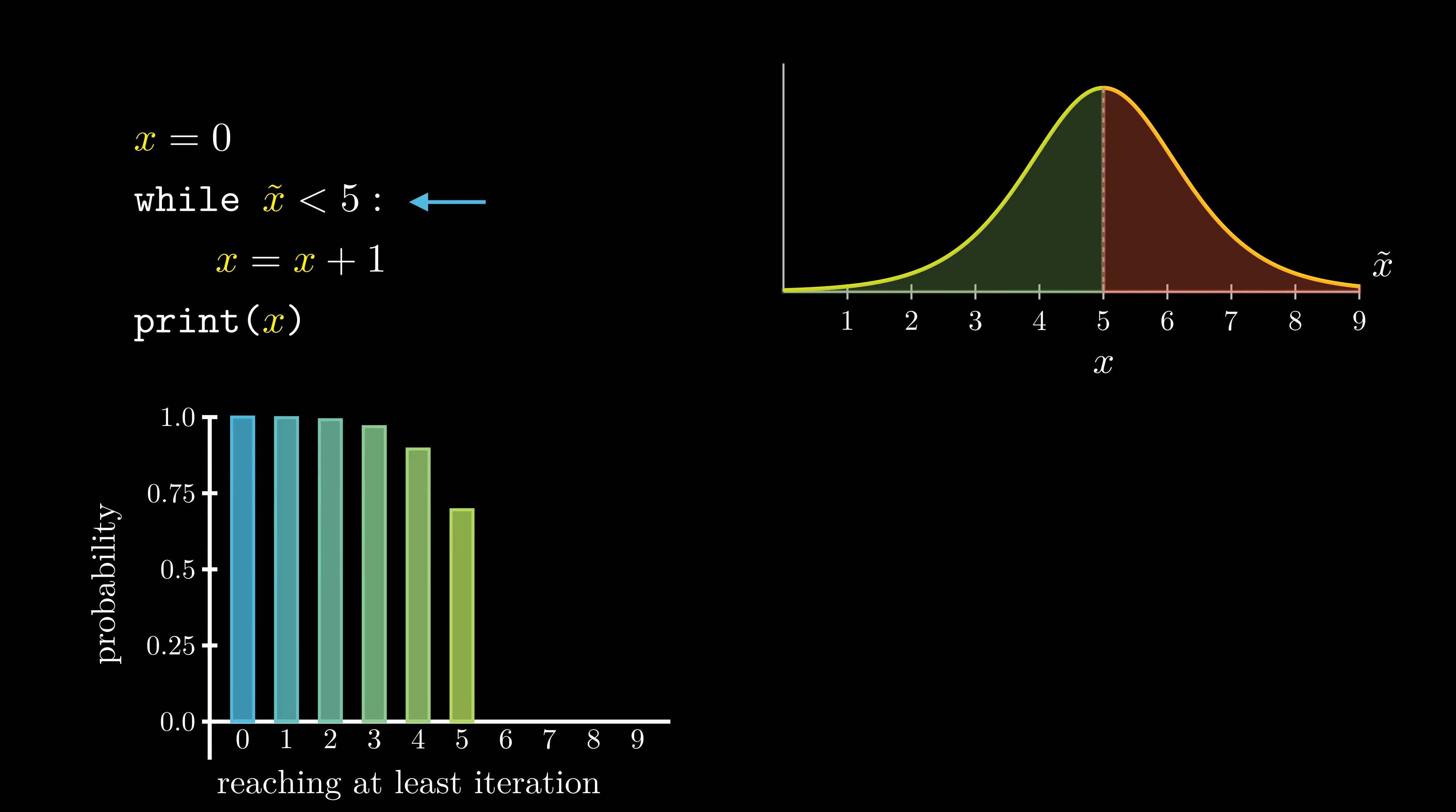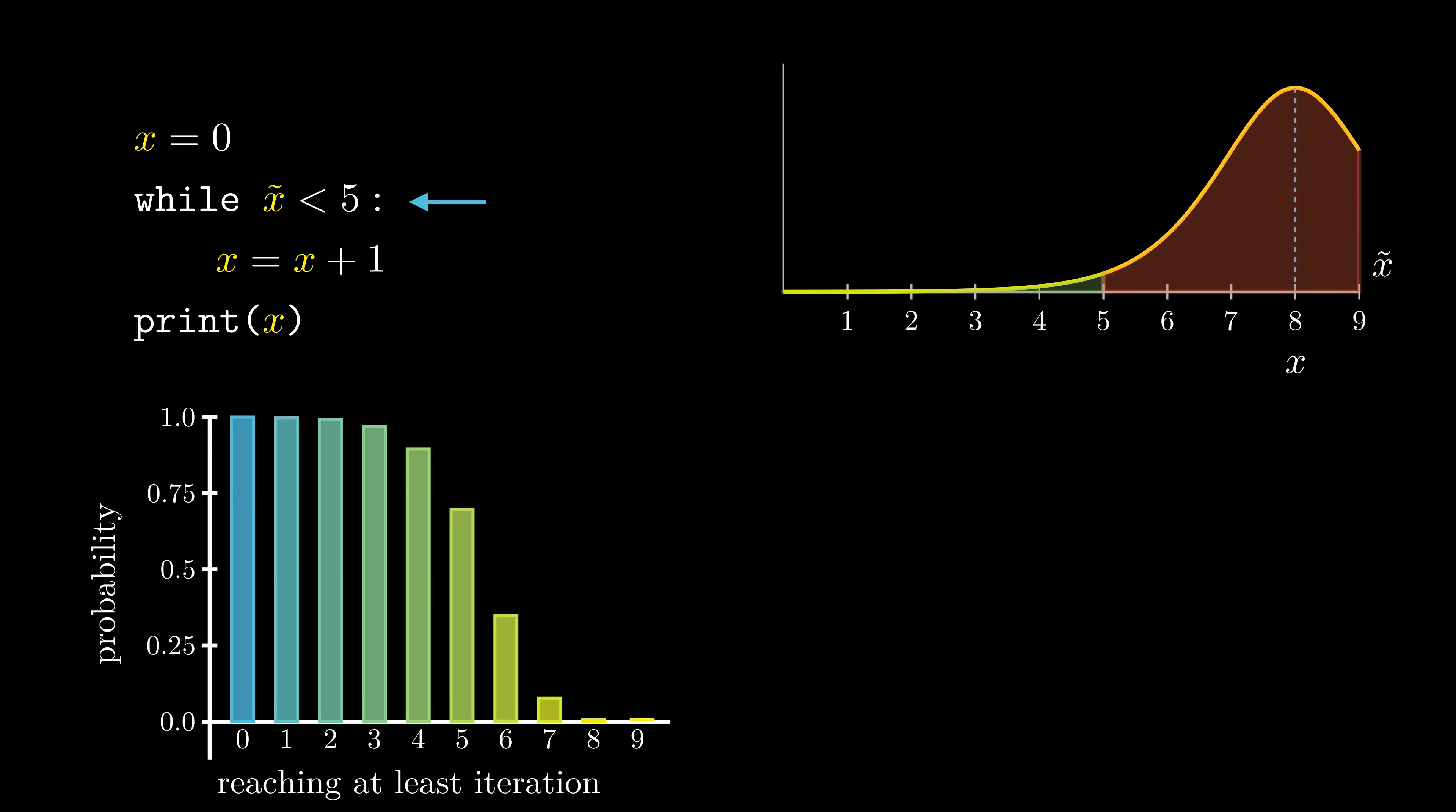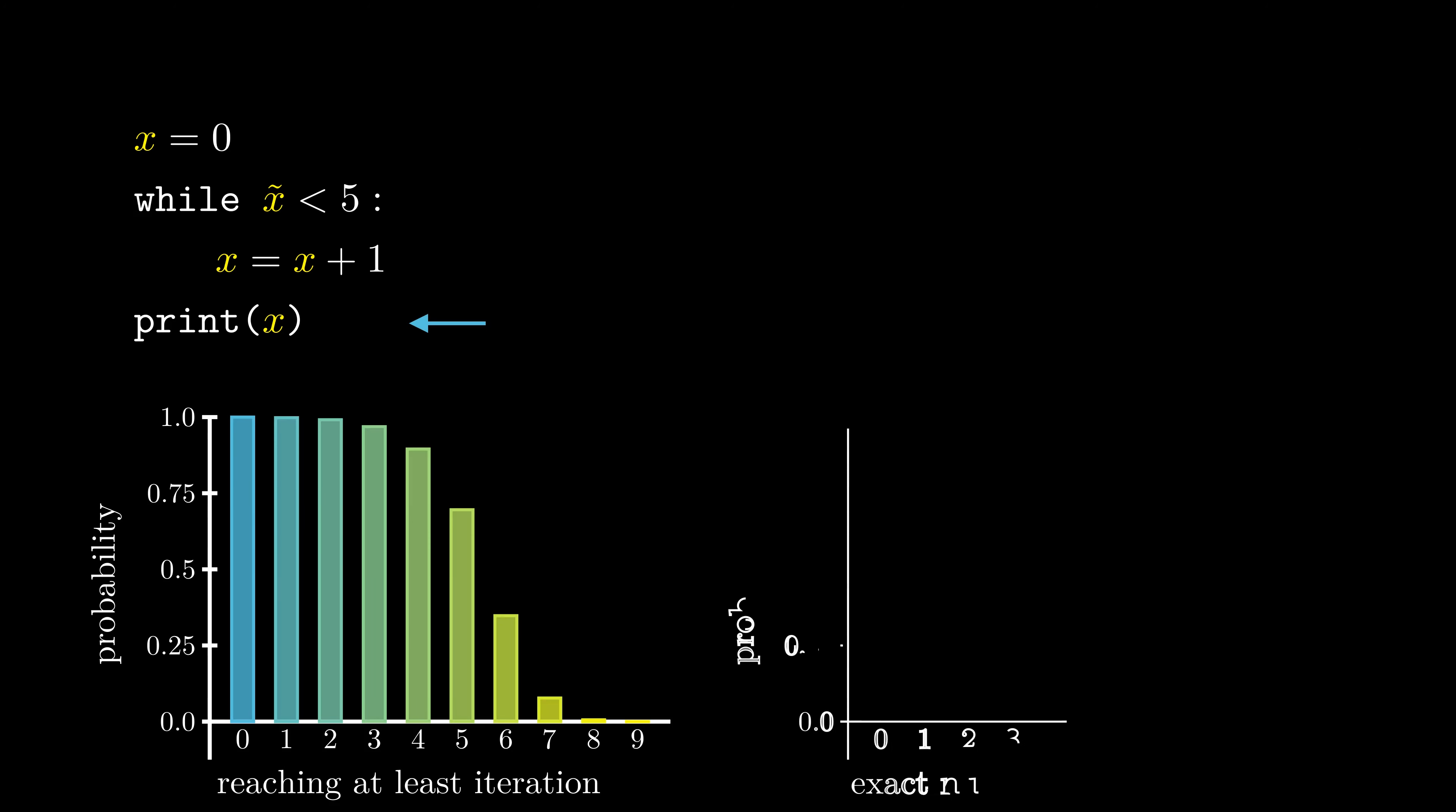As soon as we are at x equals 5, we can see that the probability significantly decays. Based on this, we can compute the probability for exact numbers of iterations via pairwise differences in the previous plot. Here, 5 has the largest probability.